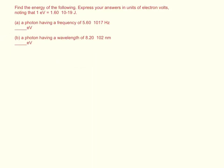Find the energy of the following. Express your answer in units of electron volts, noting that 1 eV equals 1.6 times 10 to the negative 19th joules.